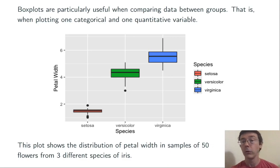The three species are setosa, versicolor, and virginica. Looking at this plot, we can immediately see that the setosas tend to have less wide petals than the other two species. In fact, every petal from the setosa variety in this set was less wide than every petal in either of the other two groups.